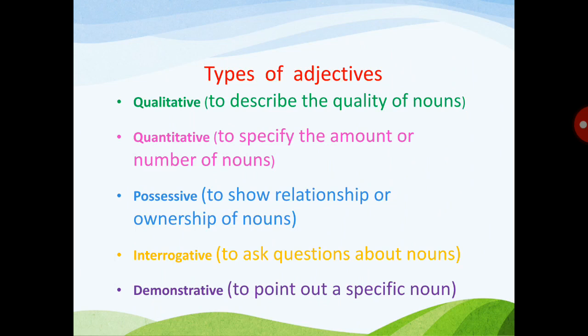Third, possessive adjective: we use possessive adjectives to show the relationship or ownership of nouns. Fourth, interrogative adjective: we use interrogative adjectives to ask questions about nouns. Fifth, demonstrative adjective: we use demonstrative adjectives to point out a specific noun.